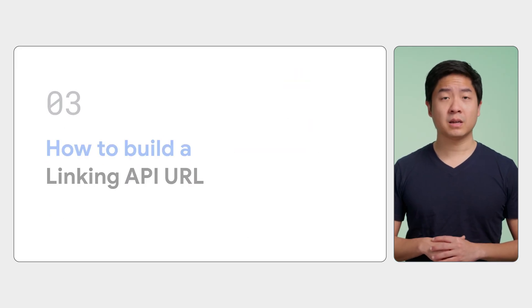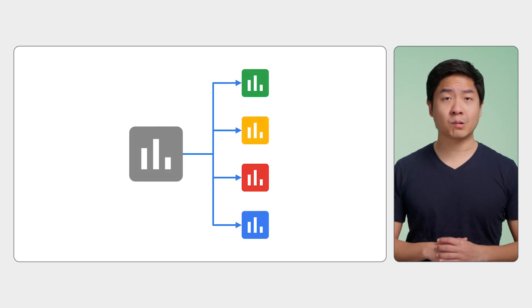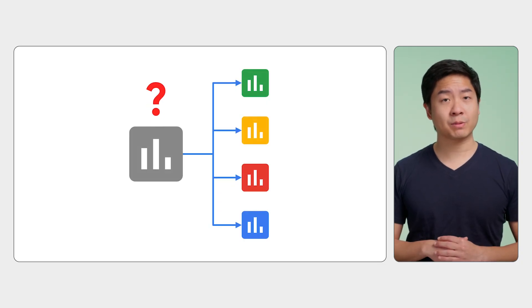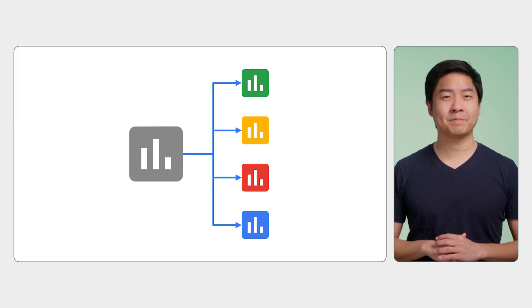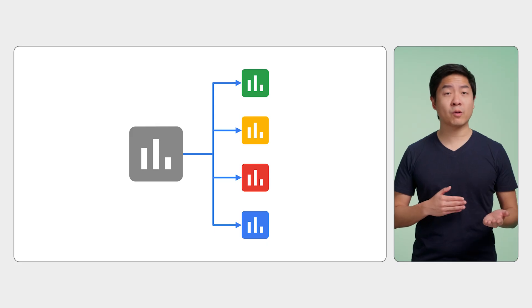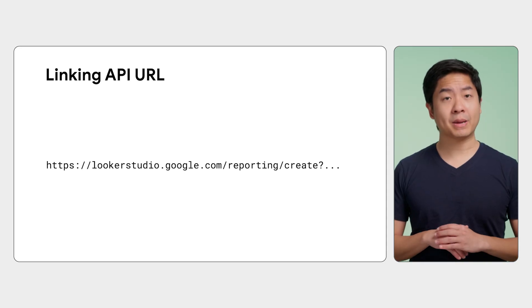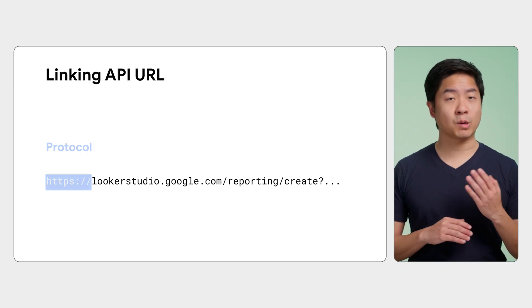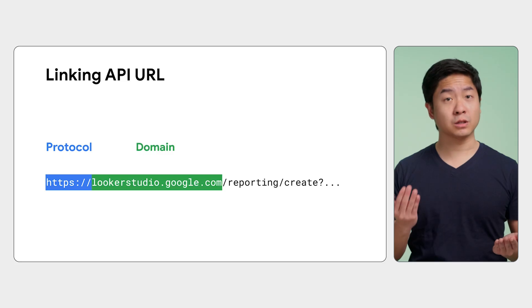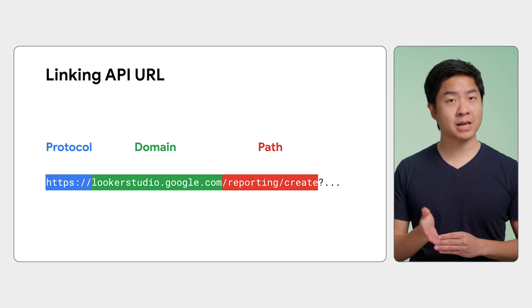How do you build a Linking API URL? Before you build the URL, you need to determine which report to use as a template. We highly recommend you use an existing report — either one you've created or a report from Looker Studio's public report gallery. The base URL, which you must use for every Linking API URL, consists of the protocol HTTPS, the domain lookerstudio.google.com, and the path /reporting/create.